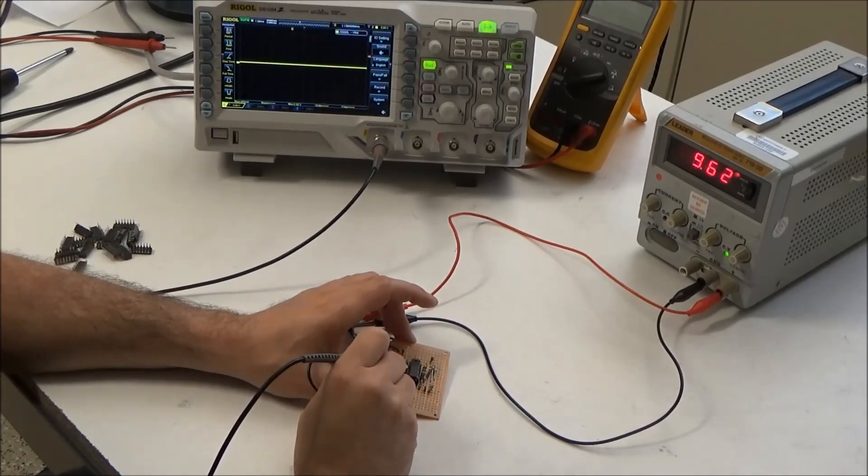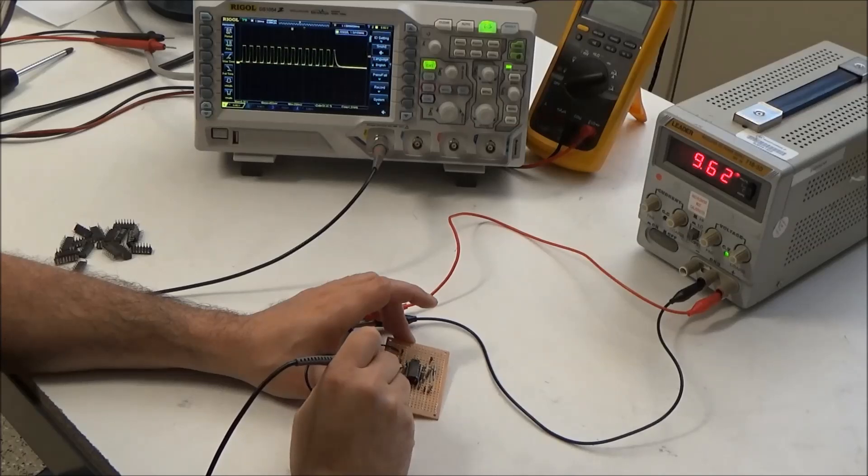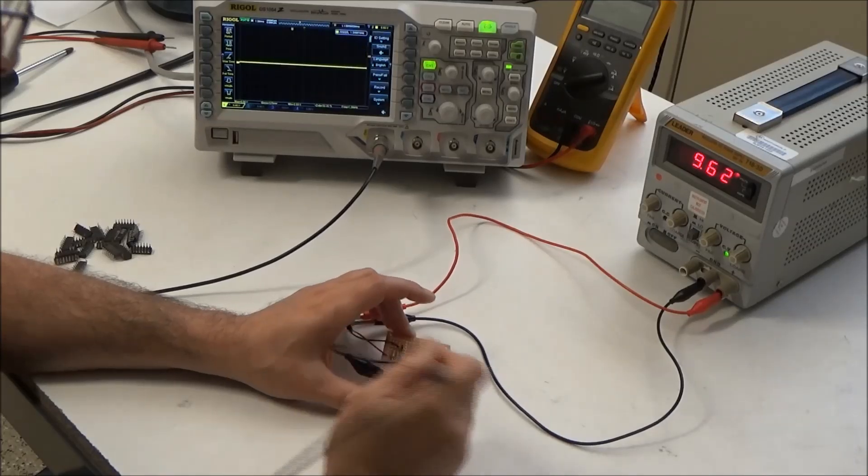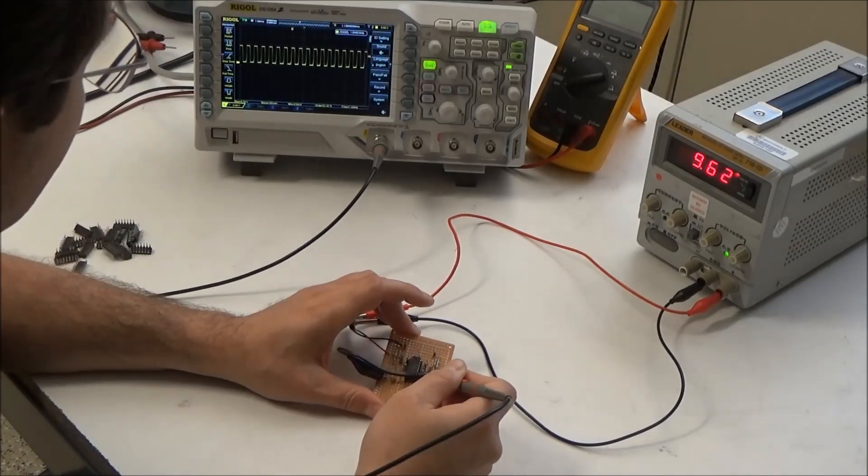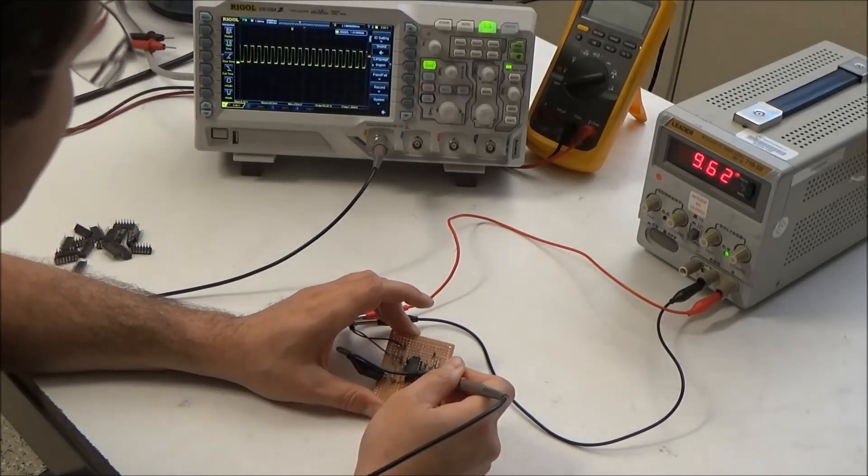So here's pin 4, and we see we have a nice square wave there, pin 5, pin 9, and pin 10.